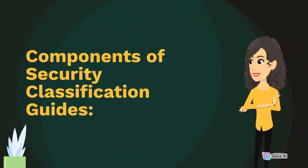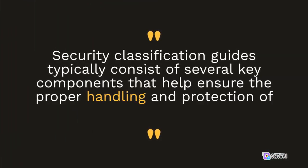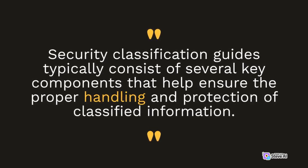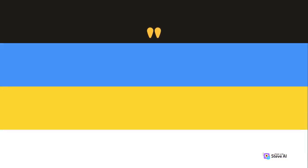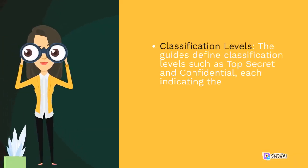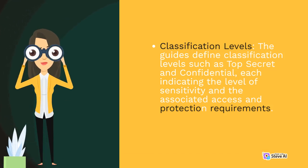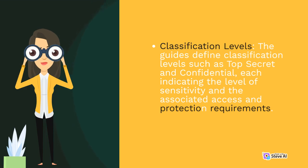Security Classification Guides typically consist of several key components that help ensure the proper handling and protection of classified information. Classification Levels: The guides define classification levels such as top-secret and confidential, each indicating the level of sensitivity and the associated access and protection requirements.